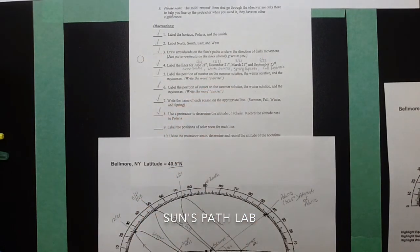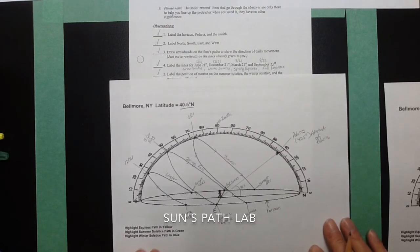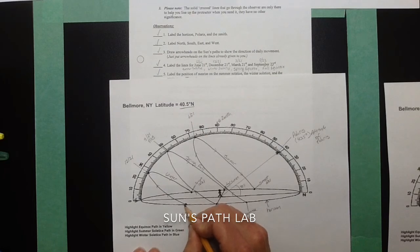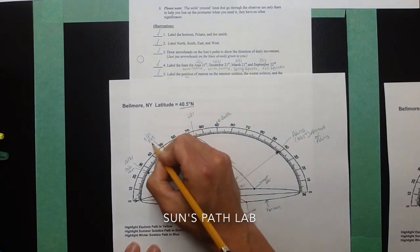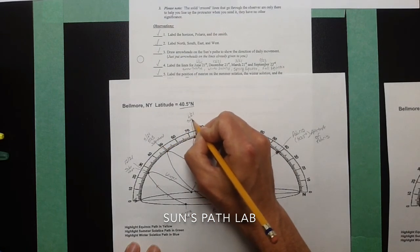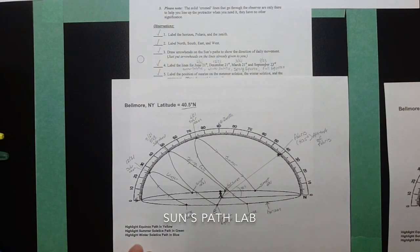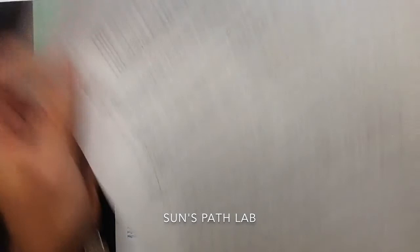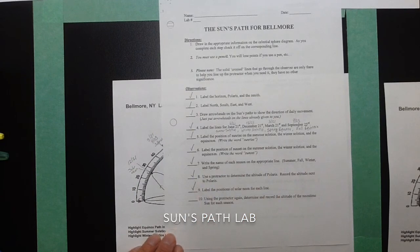Now, label the positions of solar noon for each line. Every single day, when we watch the sun, the sun rises somewhere towards the east. And when it hits the maximum altitude, the highest position each day is considered to be solar noon. So, this line would represent solar noon for each path. Solar noon is when the sun is highest in the sky. When the sun is at the highest angle, that's when you're going to get your shortest shadows. So, we've labeled the position of solar noon for each time.